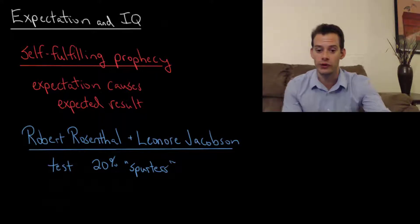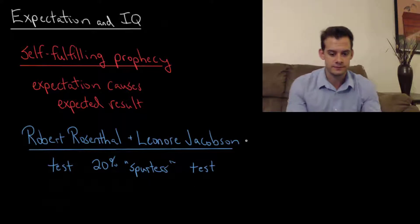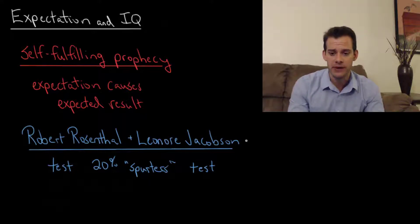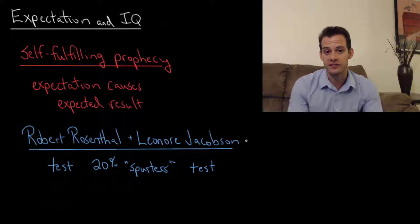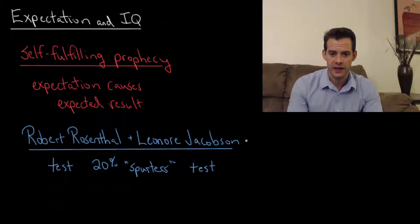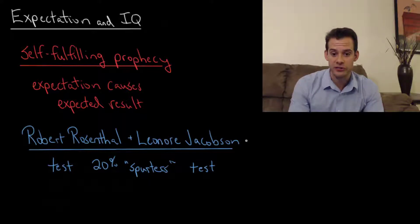At the end of the school year, eight months later, the students took the test again. The test was not actually the Harvard Test of Inflective Acquisition — that was a made-up name. It was actually an IQ test by J.C. Flanagan called the Test of General Ability, or the TOGA test, which assesses verbal IQ as well as abstract reasoning IQ. Rosenthal and Jacobson wanted to see whether there was a difference between the 20% spurter students and the rest.